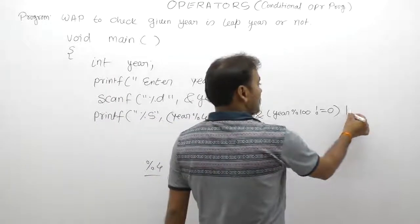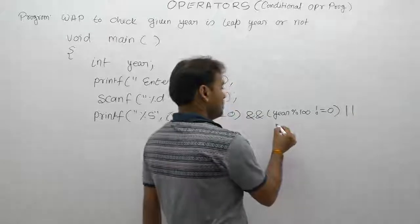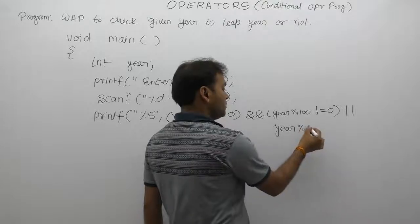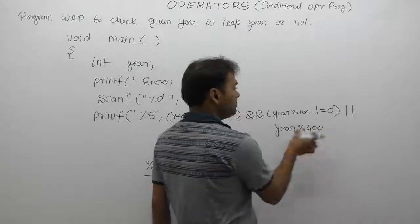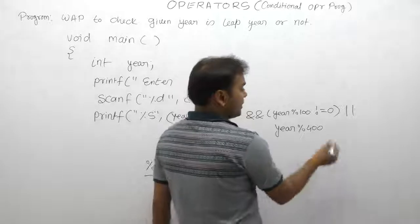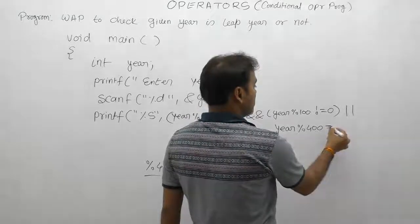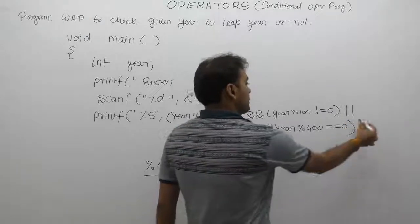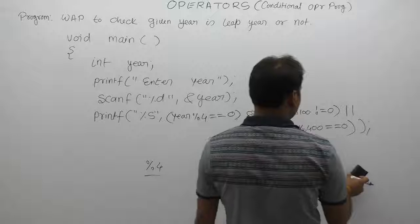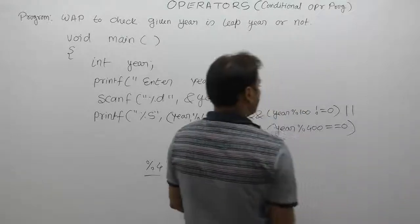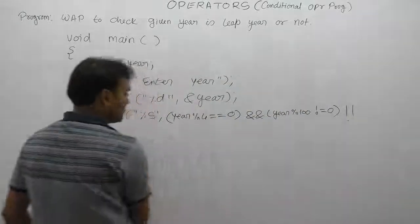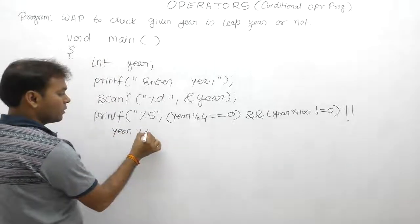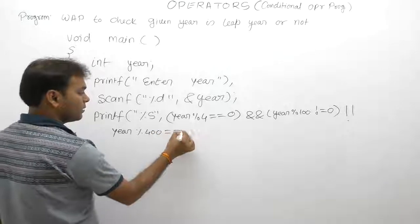Otherwise, or, year is multiple of 400. If year is multiple of 400, then year should be multiple of 400. If any condition satisfies, then according to logical OR, we shift to second one: year modulo by 400 equals equals 0. If this condition is true, then first case, second case, that condition or otherwise third condition.